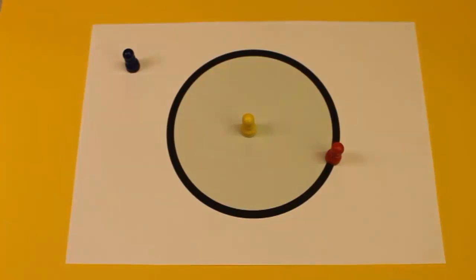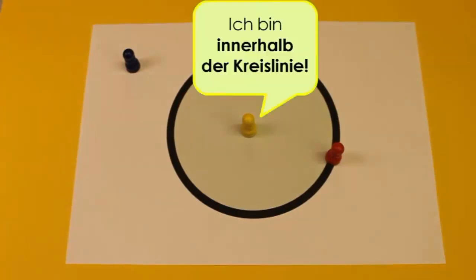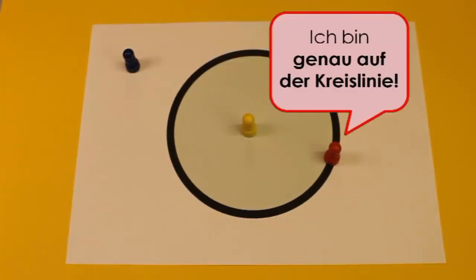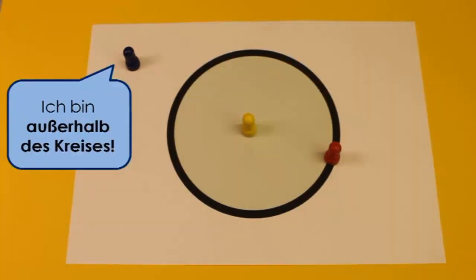So ein Punkt kann sich also innerhalb des Kreises befinden, wie der gelbe Kegel. Ein Punkt kann sich auf der Kreislinie befinden, wie der rote Kegel. Oder ein Punkt kann sich außerhalb des Kreises befinden, wie der blaue Kegel.